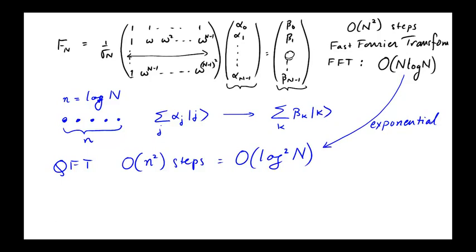Except that there is a bit of a rub here. The rub is that while the quantum Fourier transform does carry out this transformation from the α vector to the β vector exponentially faster than the classical Fourier transform can carry out this transformation...